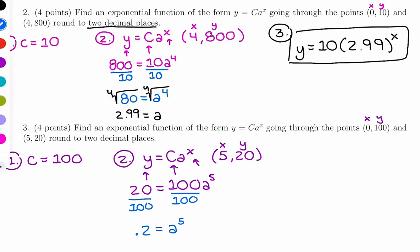So if it was a to the third, I would take the third root. A to the fourth, we did the fourth root. This is going to be a fifth root problem to get a by itself. I'm going to round to two decimal places again. So I'm going to do math number 5, and I'm going to do the fifth root of 0.2.